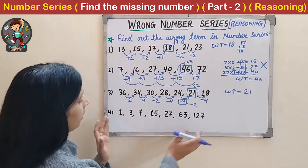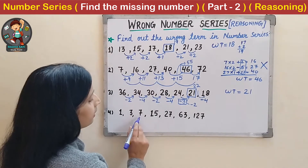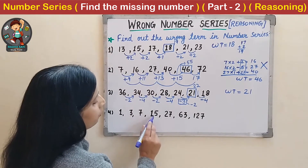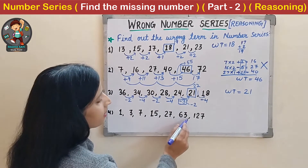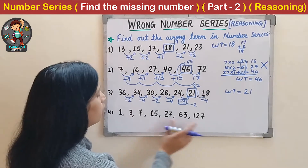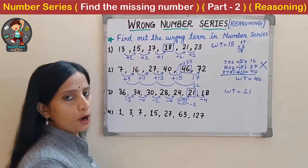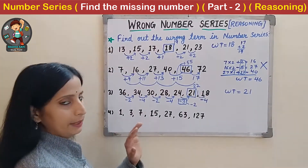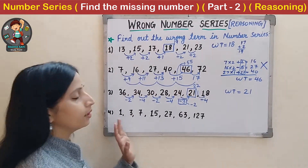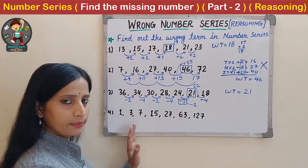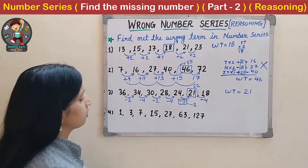Now the next question: 1, 3, 7, 15, 21, 27, 63 and 127. Here again we have two options - either it can be multiplication-based or addition-based. Let us check for multiplication first.